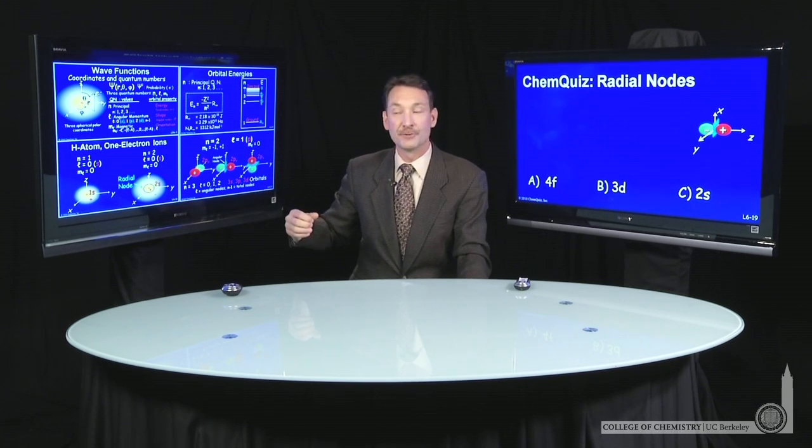Remember, for angular nodes, they go as the value of l. So if l is 0, there are 0 angular nodes. An s orbital, l equals 0, has 0 angular nodes.